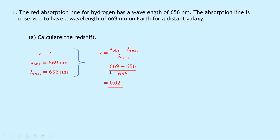A couple of things to note: redshift doesn't have any units, so it's simply a number. We didn't convert nanometers into meters here because we have a ratio of wavelengths — the numerator is in nanometers and the denominator is in nanometers, so the units cancel out anyway. It doesn't matter if you convert or not, but it saves a bit of work not doing so.